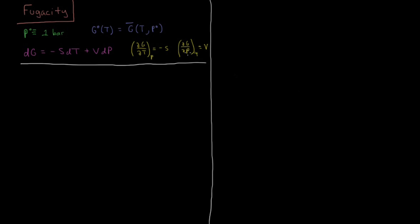In order to find the molar volume of a non-ideal gas, we look at the virial equation of state. The compressibility factor Z = PV̄/RT equals 1 for an ideal gas. For a non-ideal gas, it expands in terms of virial coefficients: Z = 1 + B2P(T)·P + B3P(T)·P² + B4P(T)·P³ + B5P(T)·P⁴ + and so on.